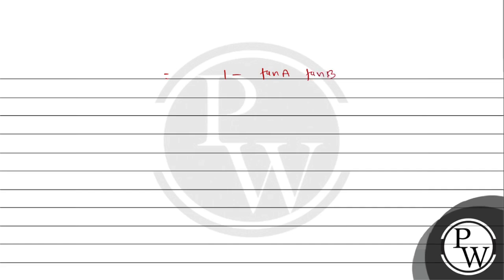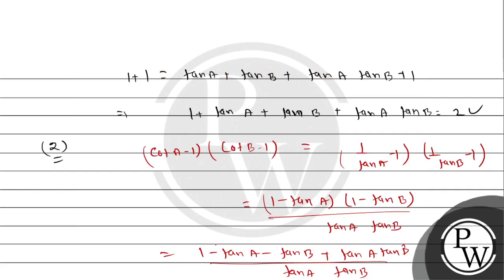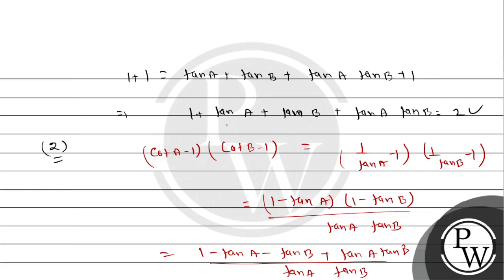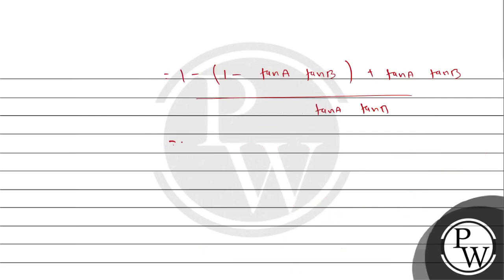10A into 10B लिख सकते हैं। यह आ जाएगा 1 minus plus 10A into 10B और अपन में 10A into 10B है। Previous part को use कर रहे हैं - यहां से 10A plus 10B की value put करेंगे तो 1 से 1 cancel out हो जाएगा, 10A into 10B यह 2 times हो जाएगा 10A into 10B। अपन में 10A into 10B है, तो यह cancel out हो गया। Answer 2 आ गया।